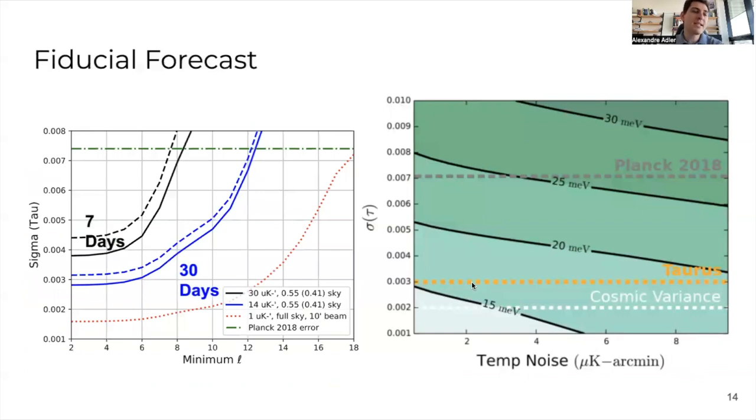The forecast is that with TAURUS, we can improve by a factor of two on the Planck 2018 limit on sigma tau. Most of the improvement happens on those very large angular scales beyond a multipole of 12. We basically end up at the tau limit that was reached by Planck.